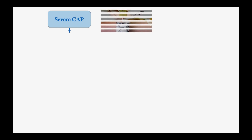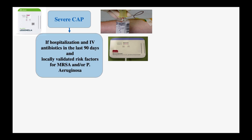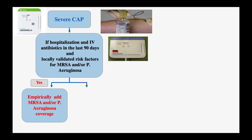But if the patient had severe community-acquired pneumonia, the next step would be to obtain blood culture, sputum culture, urine legionella antigen, and urine strep pneumonia antigen. We then need to assess whether the patient was recently hospitalized and received IV antibiotics in the last 90 days, and whether there are locally validated risk factors for MRSA and/or pseudomonas. If yes, we empirically cover for MRSA and/or pseudomonas, then de-escalate or continue antibiotics according to culture results.